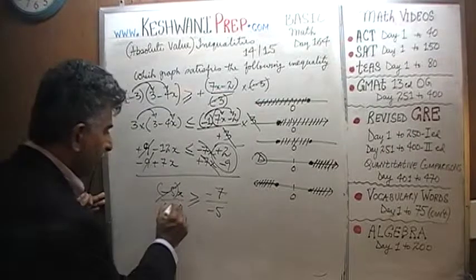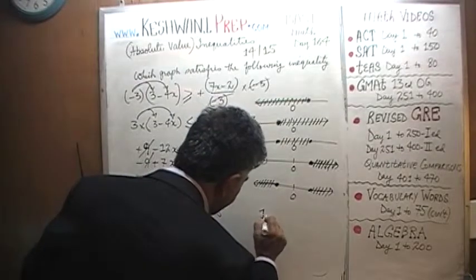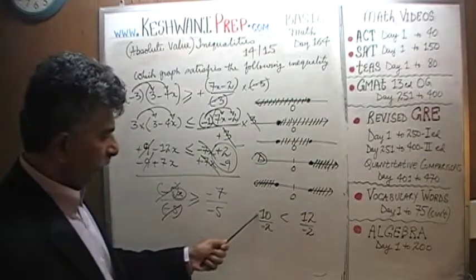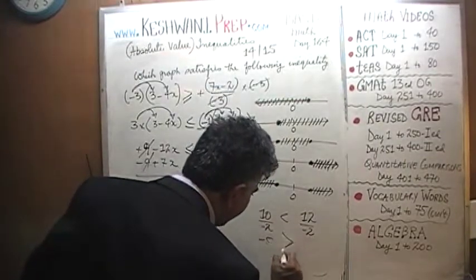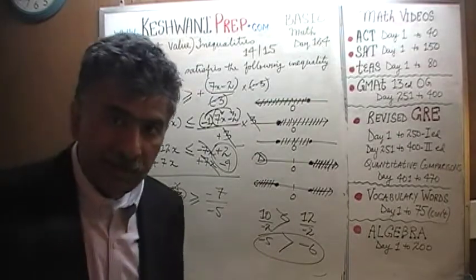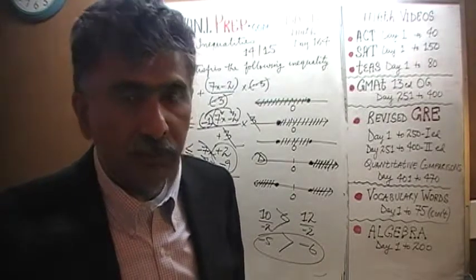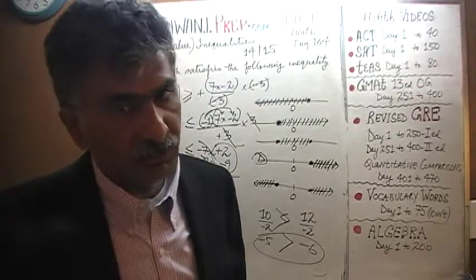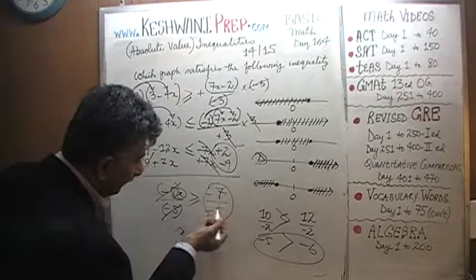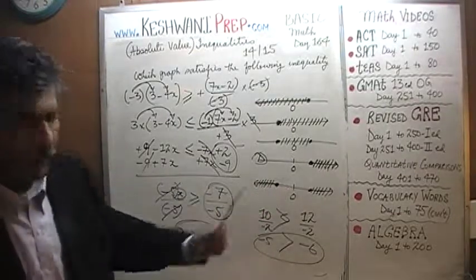After dividing by negative 5 and switching the direction, x is greater than or equal to negative 7 over negative 5, which equals 7/5. That is the same exact answer as before — x has to be more than some positive quantity. Whenever you multiply or divide an inequality by a negative number, switch the direction immediately. The answer is D again, confirming both approaches give the same result.